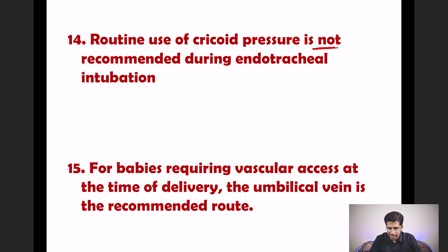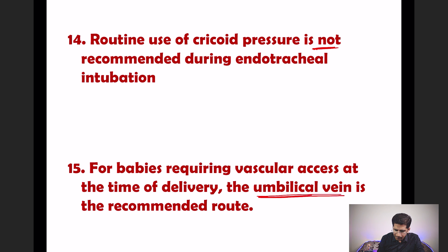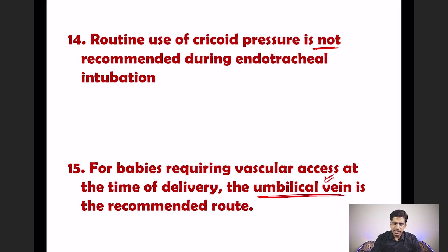The fourteenth update: routine use of cricoid pressure is not recommended during endotracheal intubation. The fifteenth and final update: for babies requiring vascular access at the time of delivery, the umbilical vein is the recommended route. These are all the updates given by AHA in 2020 for BLS and ACLS.